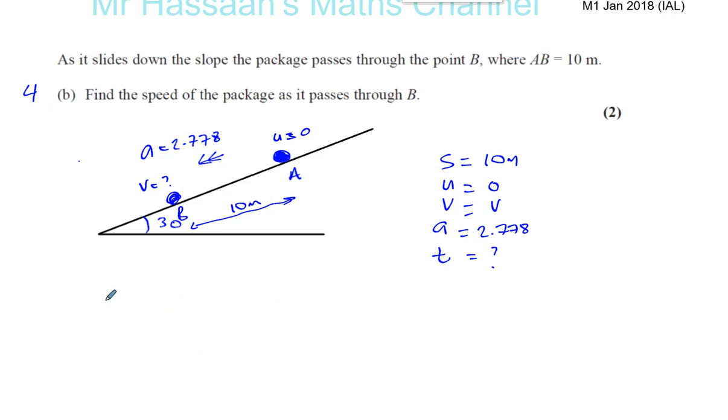If we think about the only equations that we know, there's one: v squared equals u squared plus two a s. You have to know all the equations of motion, and this is one of them which deals with just v, u, a, and s. There's no t involved here.